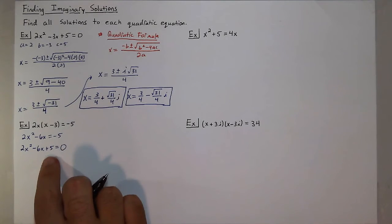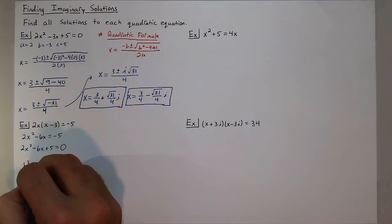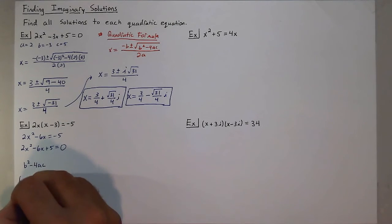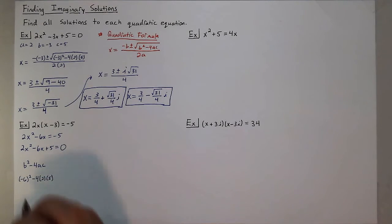Now, if you suspect that it might not have any real solutions, you can look at the discriminant first, and then finish the rest of the problem from there. Meaning I can take negative 6 squared minus 4 times 2 times 5. And that gives me 36 minus 4 times 10, so 40, which gives me negative 4.